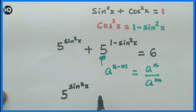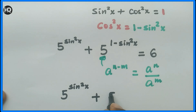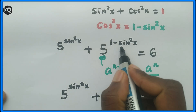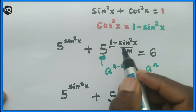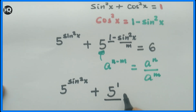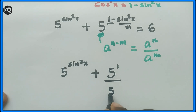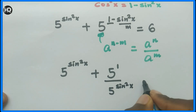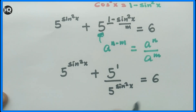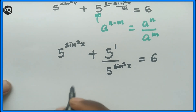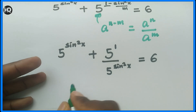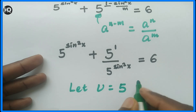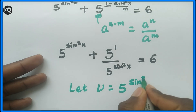Applying this rule, the equation becomes 5 to the power of sine squared x plus 5 to the power of 1 divided by 5 to the power of sine squared x equals 6. Now let u equal 5 to the power of sine squared x.